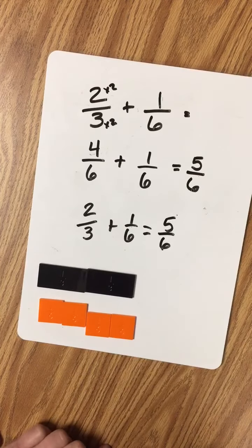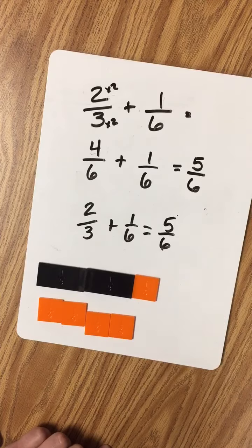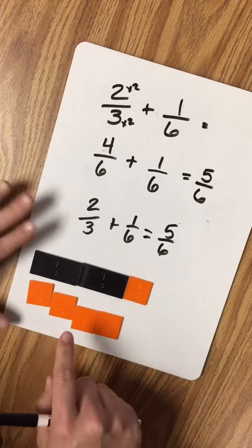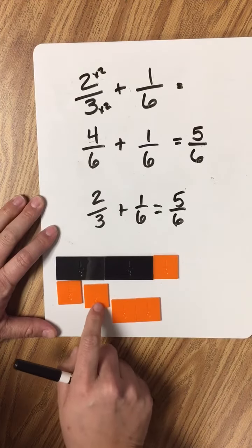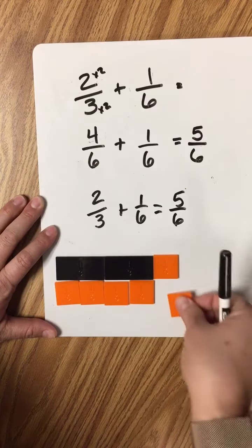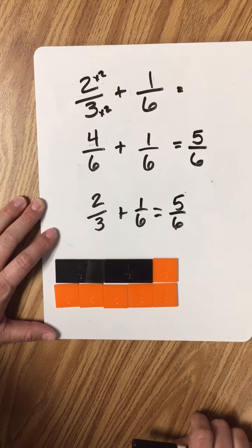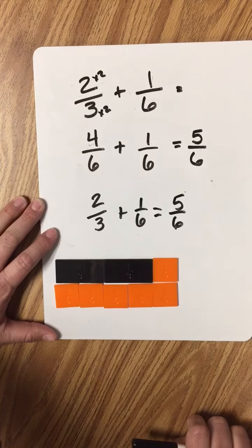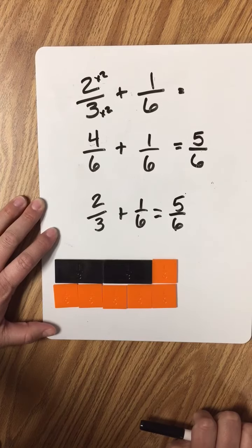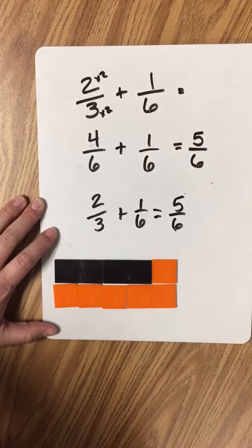2 thirds plus 1 sixth equals 5 sixths. So, 1 sixth, 2 sixths, 3 sixths, 4 sixths, and 5 sixths. It works. So, when your teacher asks you to find common denominators, she really means it, because that's the only way it makes sense. Thanks for watching!